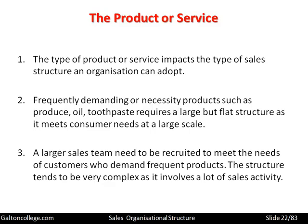A larger sales team needs to be recruited to meet the needs of customers who demand frequent products. The structure tends to be very complex as it involves a lot of sales activity. The more popular the product, the more sales team members will be required — but that also creates complexity about communications, making sure all of them are saying the same thing and working towards the same set of objectives. Any variation can cause confusion in the minds of customers and lead to a loss of sales, so it's very important that the sales team are briefed and stick to that brief.